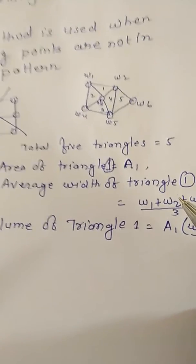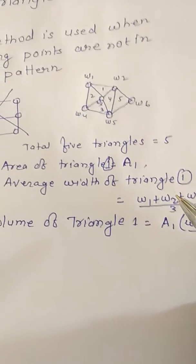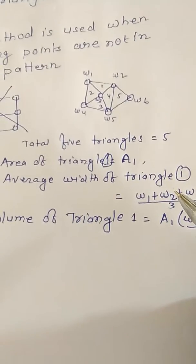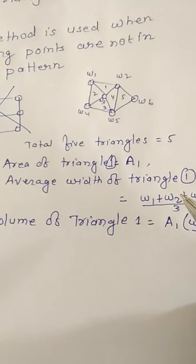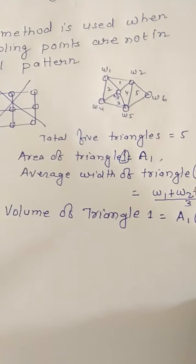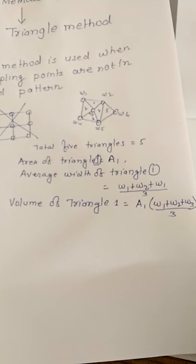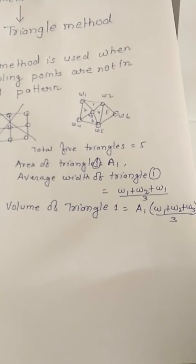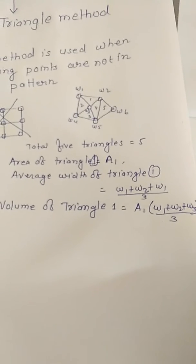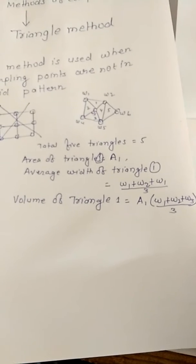In this method, we calculate the area and then by averaging the widths of the concerning boreholes we get the average width of the triangle, and in this way we can calculate the volume of each triangle. Similarly, the volume of triangle 2, 3, 4, and 5 can be calculated.